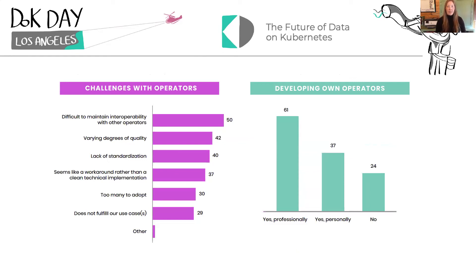We asked people to identify what they run into with Kubernetes operators, and again we see interoperability as a top concern. A majority of respondents experience difficulty maintaining interoperability with other operators as they manage them across their portfolio — databases being the number one workload, you can imagine how many databases an org uses and they may have an operator for each one. The number two challenge is that operator quality is lacking — in fact, this is the number one reason people cite for not running data on Kubernetes. Number three, there are no standards. As a consequence, 61% of people are creating their own operators professionally.